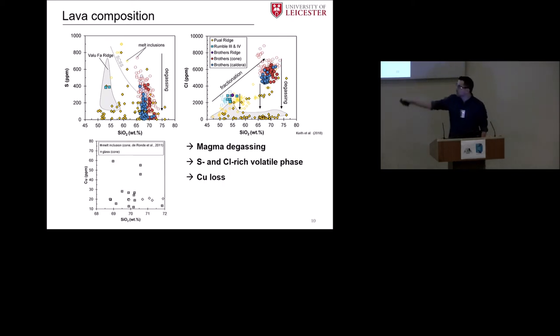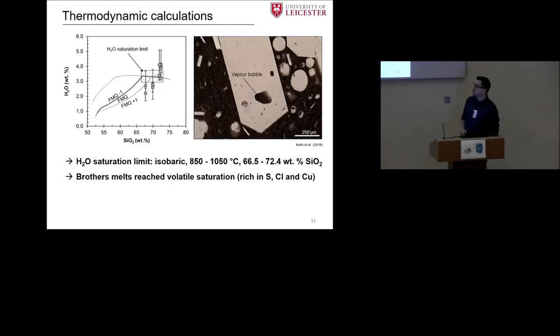When we have now a look on copper, I added here data from Cornel de Ronde and the melt inclusion data also shows higher copper contents than our glass analyses. We also may have a copper loss there during magma degassing. And then the next point for us was if this works for sulfur, chlorine and copper, what does water really do? If we reach saturation in a melt for degassing, then water must do the same thing. We did a couple of thermodynamic calculations.